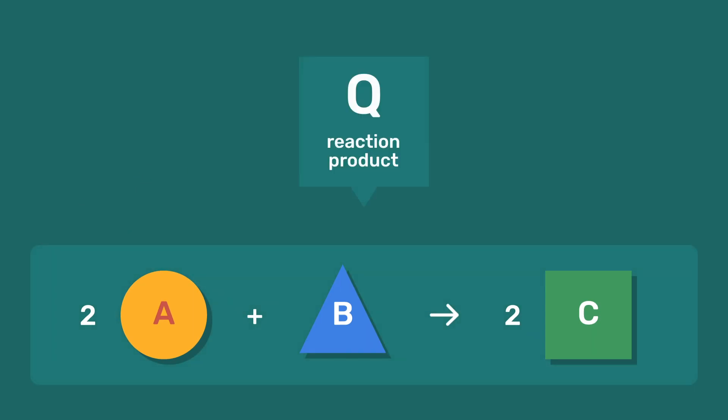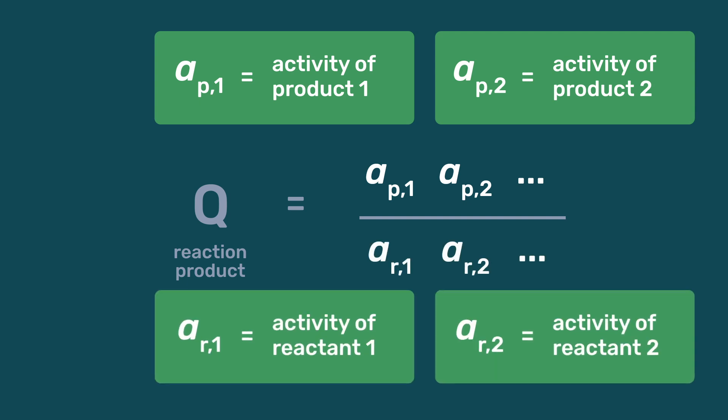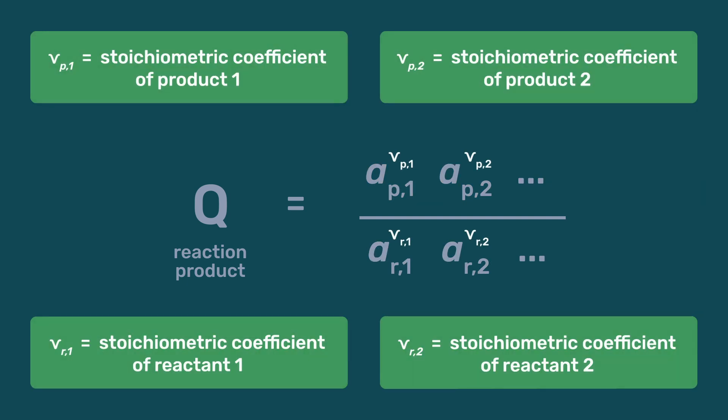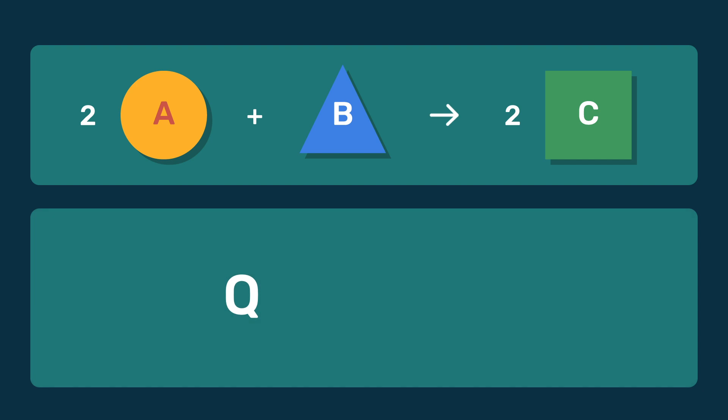Its reaction product Q depends on the activities of products and reactants, as well as on their stoichiometric coefficients. In this particular case, Q equals activity of C to the power 2, divided by the product of activity of A to the power 2 and activity of B to the power 1.